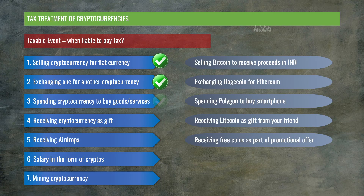With this, we have completed understanding all seven taxable events. Another important thing to remember is TDS. TDS is applicable on the sale of cryptocurrencies. The buyer would be deducting tax at the rate of 1% if the sale consideration is over some specified threshold limits.